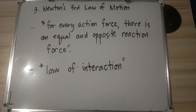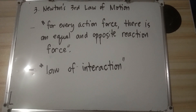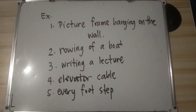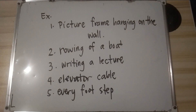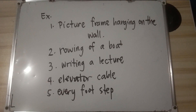Newton's Third Law of Motion states that for every action force, there is an equal and opposite reaction force. It is also called the Law of Interaction. Examples include a picture frame hanging on a wall, rowing a boat, writing on a surface, an elevator cable, and every footstep. And that's all for Newton's Laws of Motion. Thank you for watching!